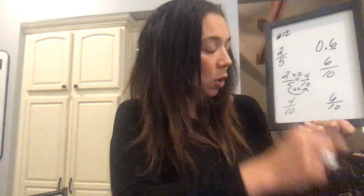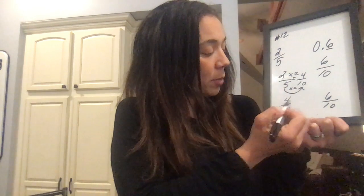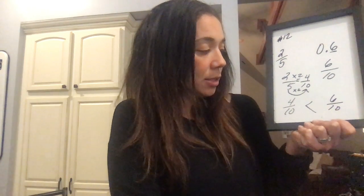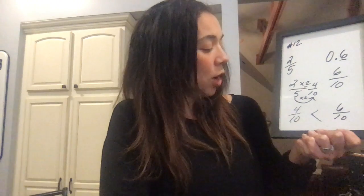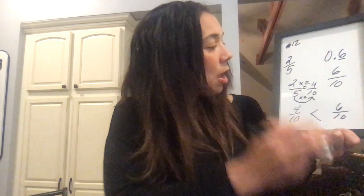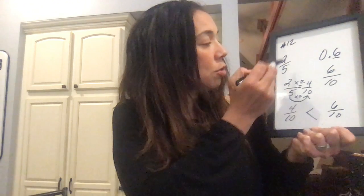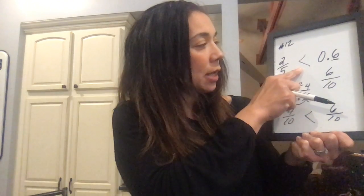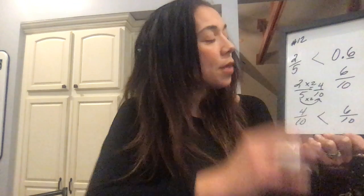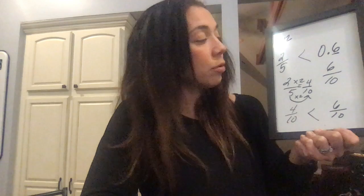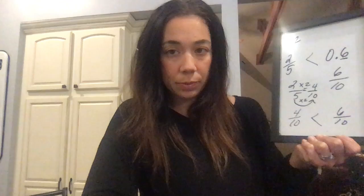Now we can easily compare 4 tenths to 6 tenths. Because our denominators are exactly the same, we can just look at our numerators and decide which one is bigger. We know that 4 is less than 6, so 4 tenths is less than 6 tenths. So coming back to our original problem, since 2 fifths means the same as 4 tenths, we know that 2 fifths is less than 6 tenths.